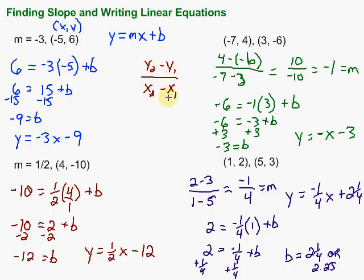If we're asked to find the slope, remember, we take the difference in the y's over the difference in the x's. If we're asked to write a linear equation, given either 2 points or the slope in a point, we can fill in what we know, solve for that other piece, and then pop the stuff back in to write our equation. I hope that helps. Good luck.